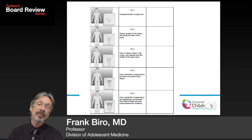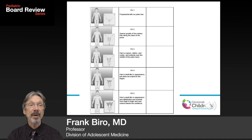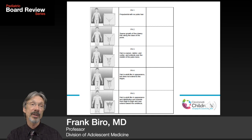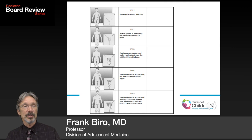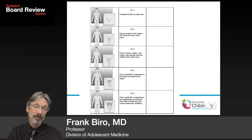In boys, pubic hair staging was published by Marshall and Tanner, though it was actually Reynolds and Wines who published it a couple of years earlier. Marshall and Tanner popularized it, and the work became known as 'Tanner stages,' though it is now being called the sexual maturity rating system.